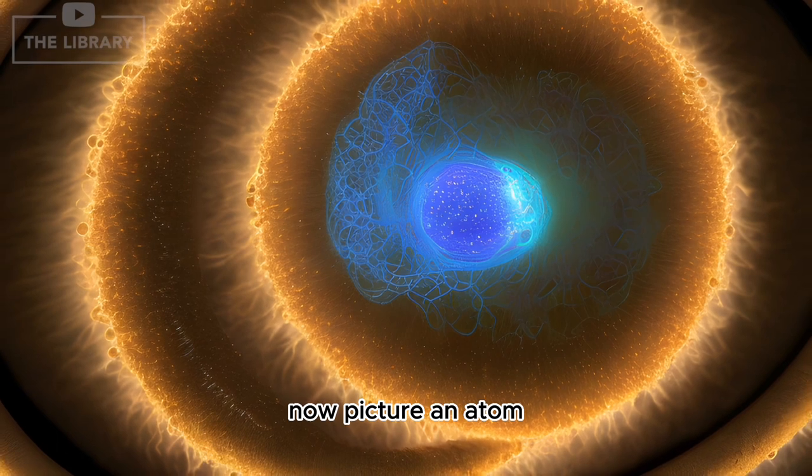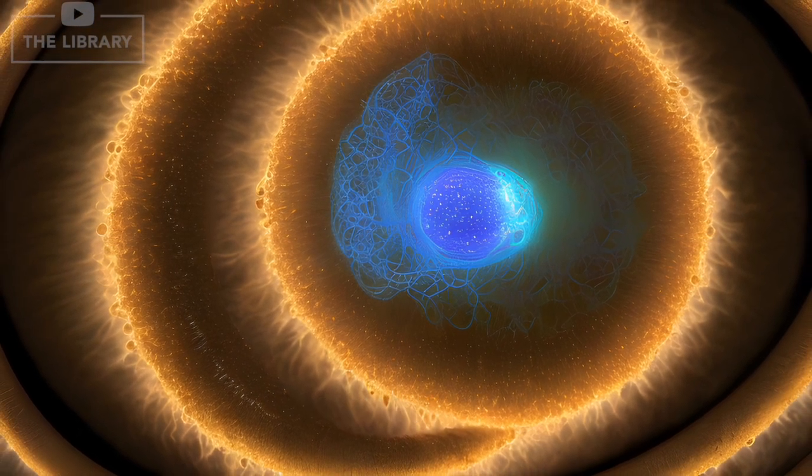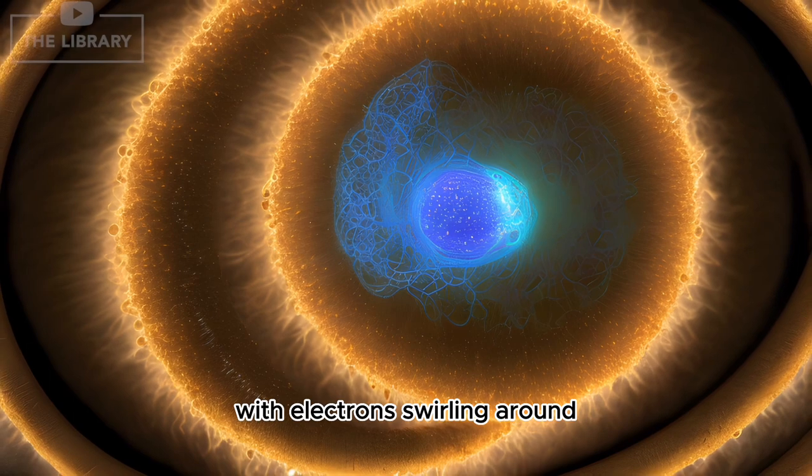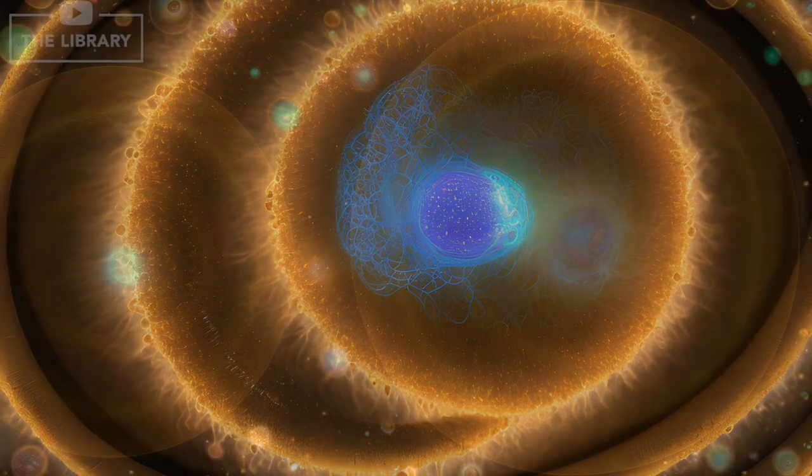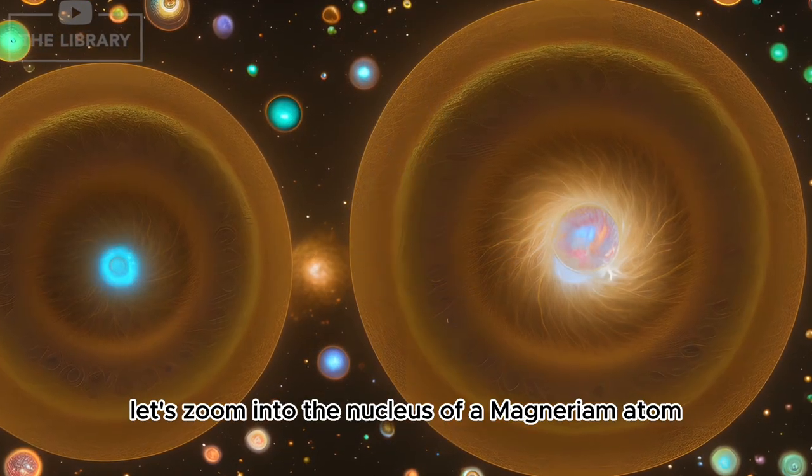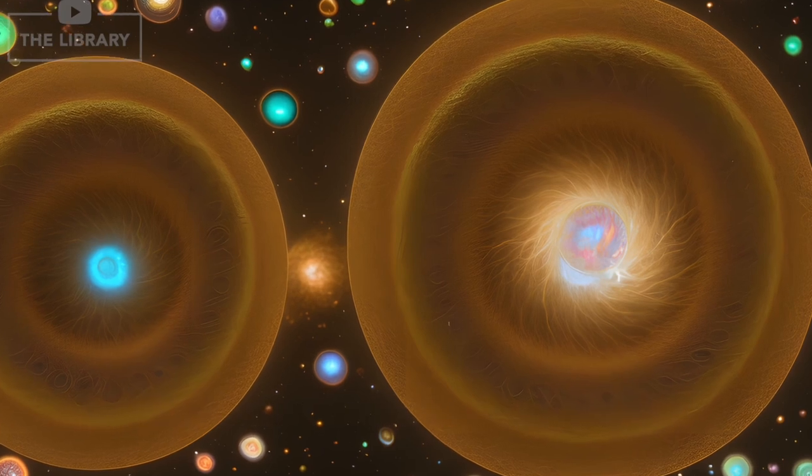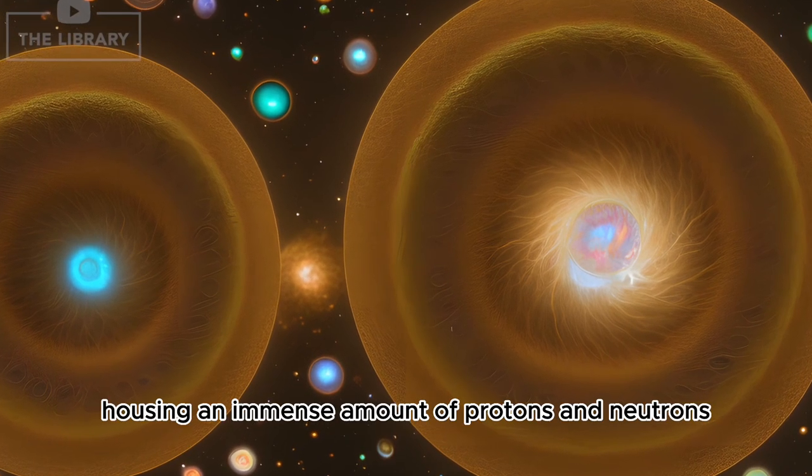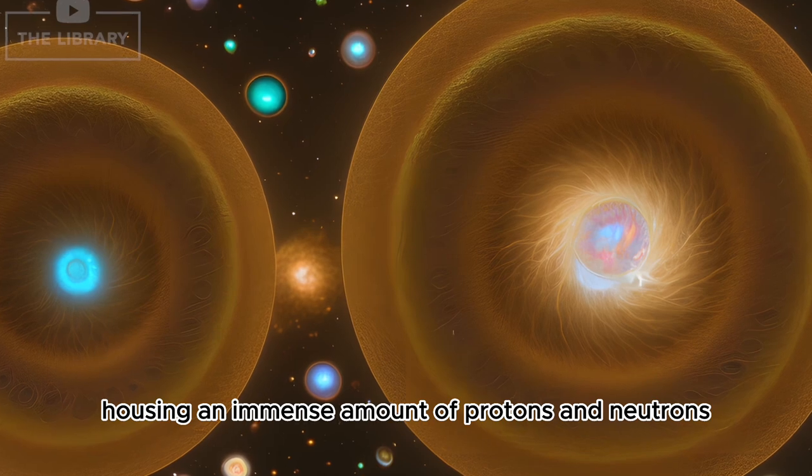Now, picture an atom. What do you see? Probably a nucleus with electrons swirling around. Let's zoom into the nucleus of a Mitnerium atom. The nucleus is like a treasure chest, housing an immense amount of protons and neutrons.